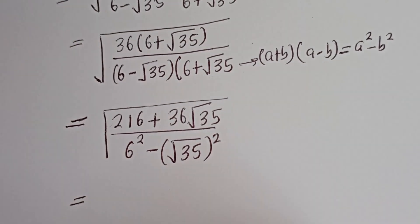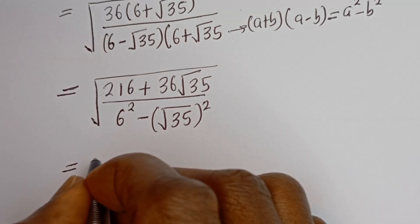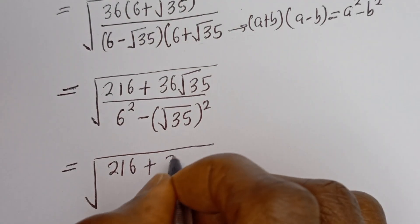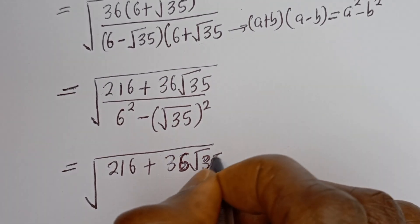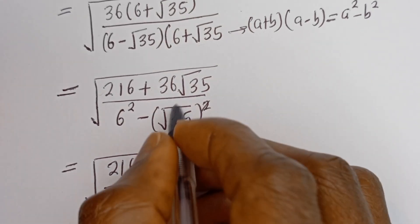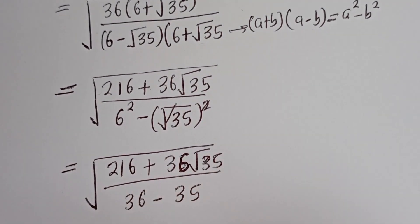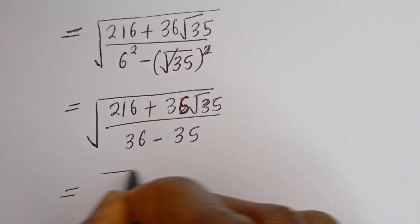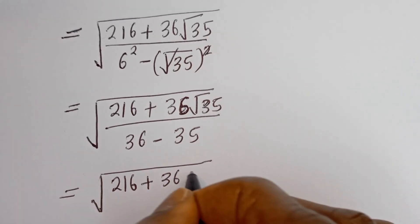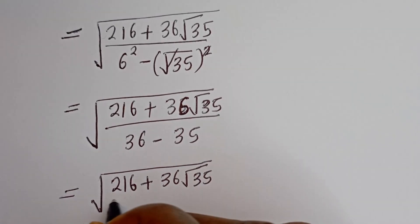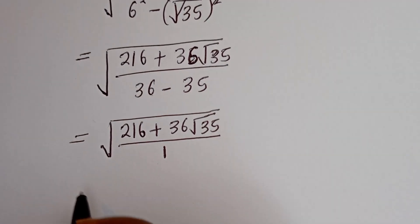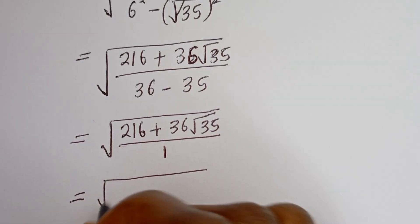So the denominator can be written as 6 squared minus square root of 35 squared, which equals 36 minus 35, that is 1. Therefore the expression simplifies to square root of 216 plus 36 root 35, divided by 1.